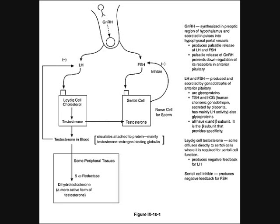GnRH is synthesized in the preoptic region of the hypothalamus and secreted in a pulsatile manner into the hypophysial portal vessels. This produces the pulsatile release of LH and FSH. The pulsatile release of GnRH prevents down-regulation of its receptors in the anterior pituitary — it is an evolutionary trait. LH then activates the Leydig cells to form cholesterol, which produces testosterone. Testosterone is sent into the blood, where it provides a negative feedback inhibiting excess LH.